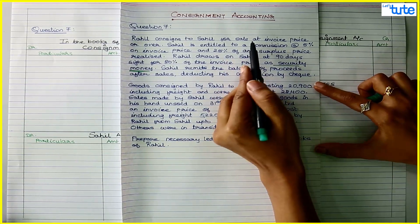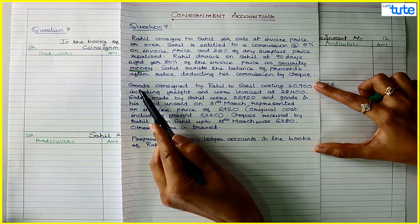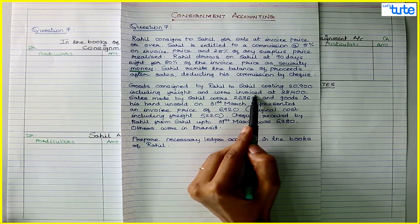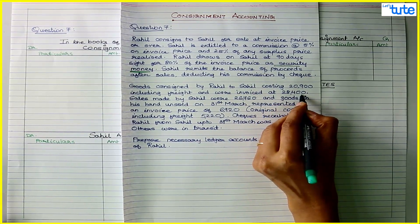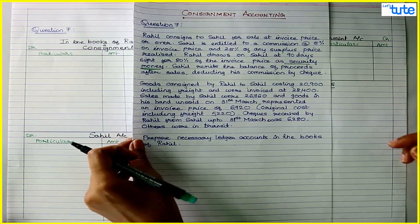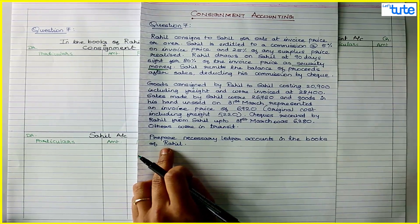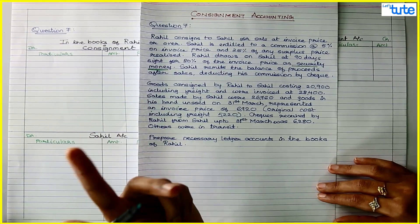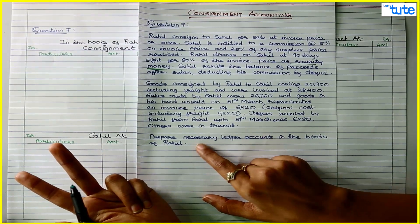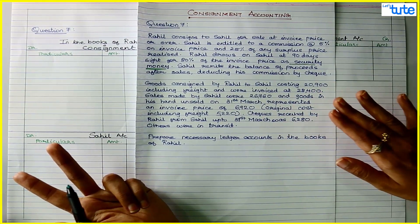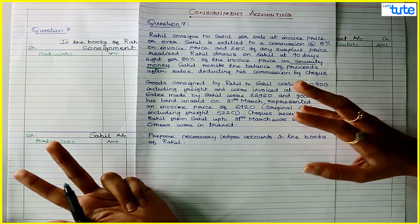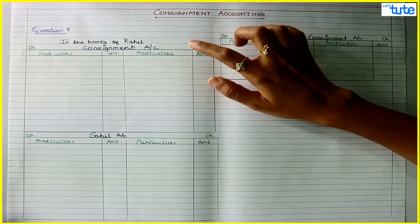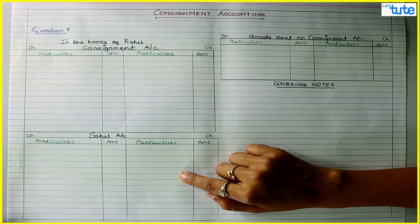The goods are sent at invoice price of 28,400 while the cost is 20,900. In the books of Rahil, the consignor, we will prepare the consignment account, the consignee account (Sahil account), and the goods sent on consignment account. There is no abnormal loss, no del credere commission, no credit sales, so we are not preparing any abnormal loss account or consignment debtors account.